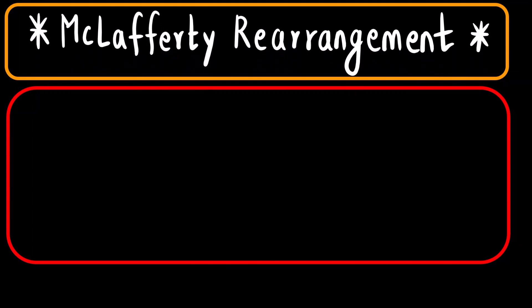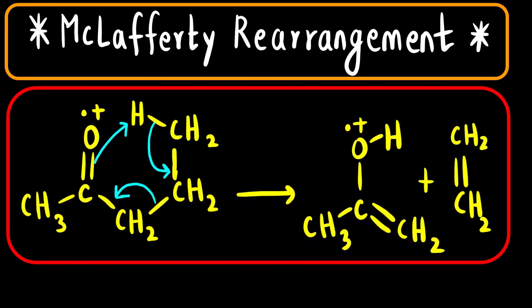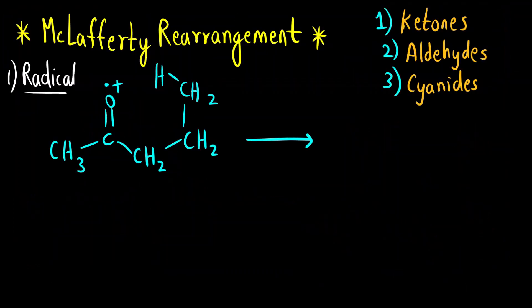Hello everyone, welcome to Chemazon Complete Chemistry. In today's video we are going to see a name reaction, or we can say a rearrangement, called the McLafferty rearrangement. This is a mechanism of the McLafferty rearrangement that we will see in detail, and in which compounds can we see McLafferty rearrangement — in the radical cation or molecular ion that is formed from ketones, aldehydes, and cyanides.